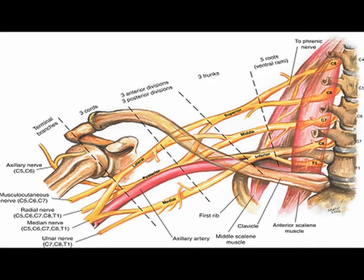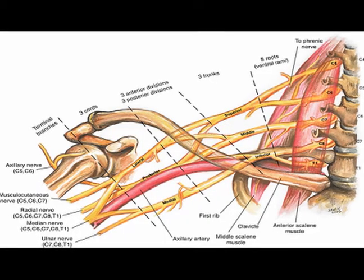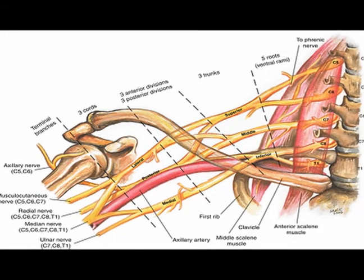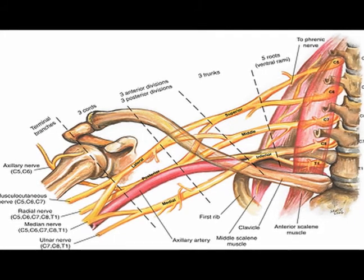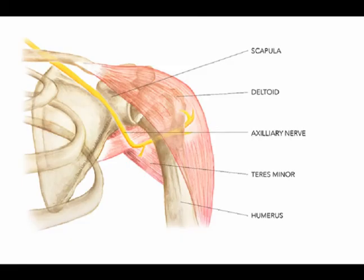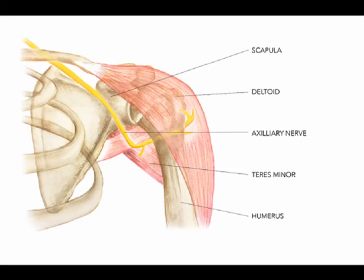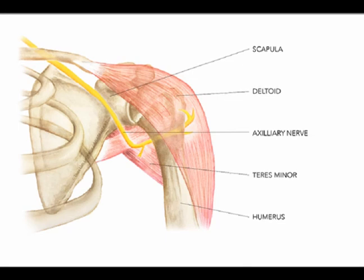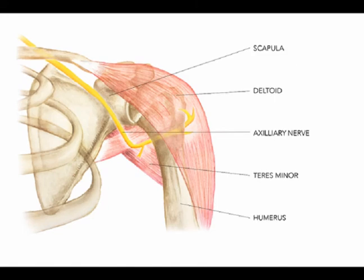The axillary nerve originates from the posterior cord of the brachial plexus with nerve fibers from vertebral levels C5, C6. Again, the axillary nerve is the motor innervation for the deltoid muscle and the teres minor muscle, and it is the sensory innervation for the skin over the lower part of the deltoid muscle.